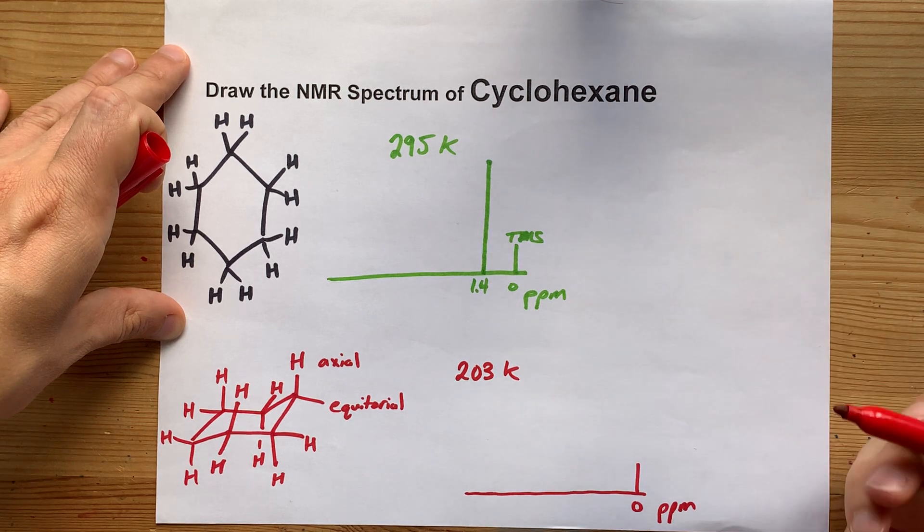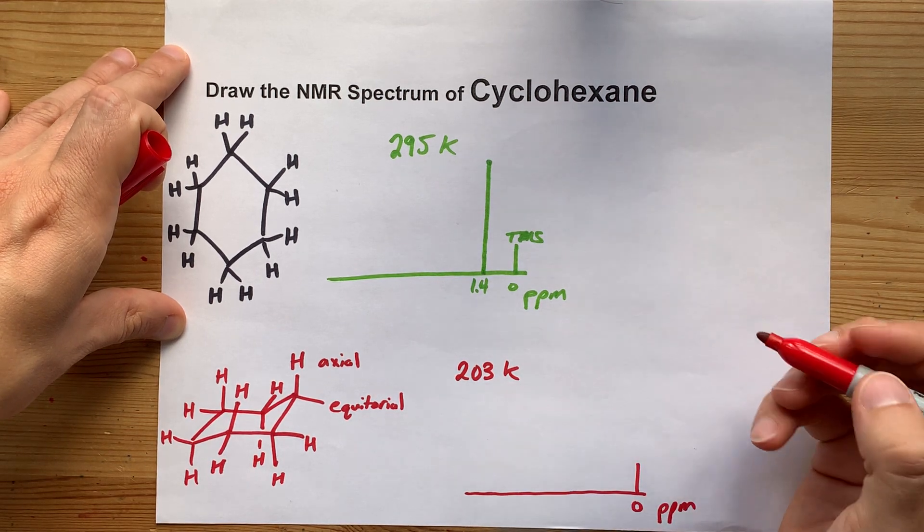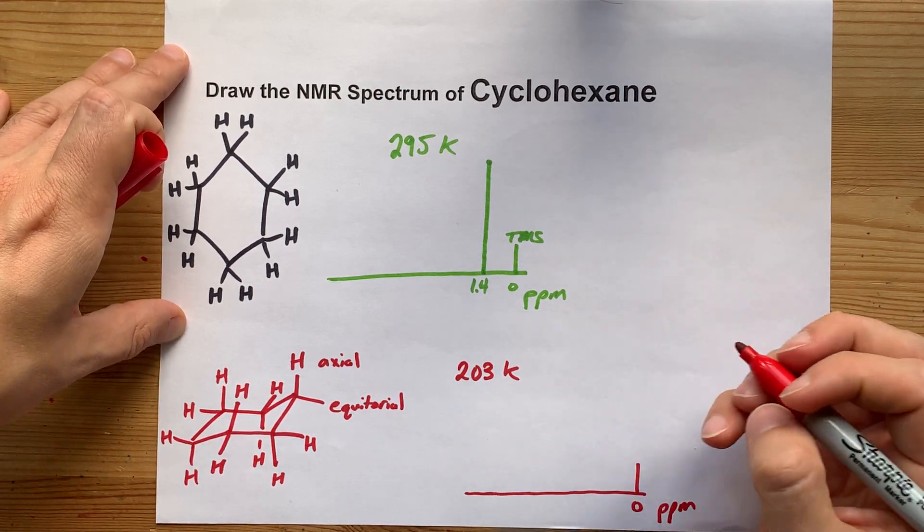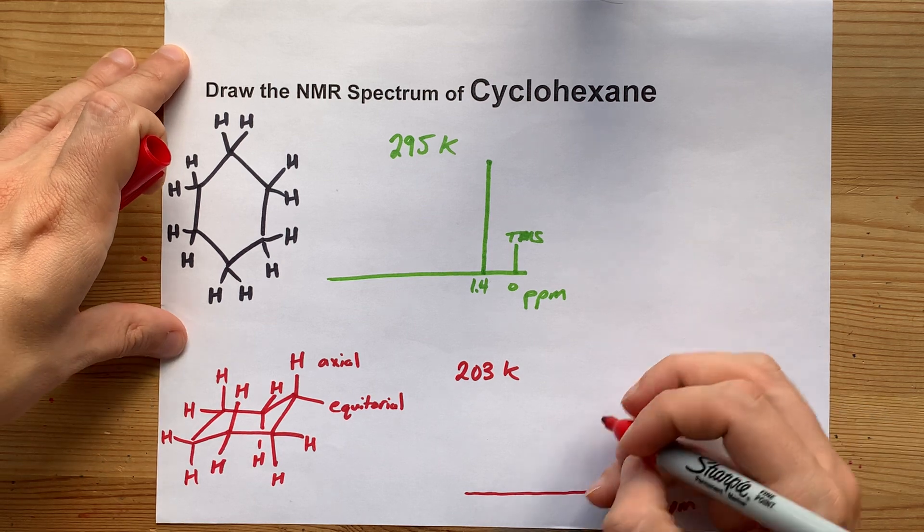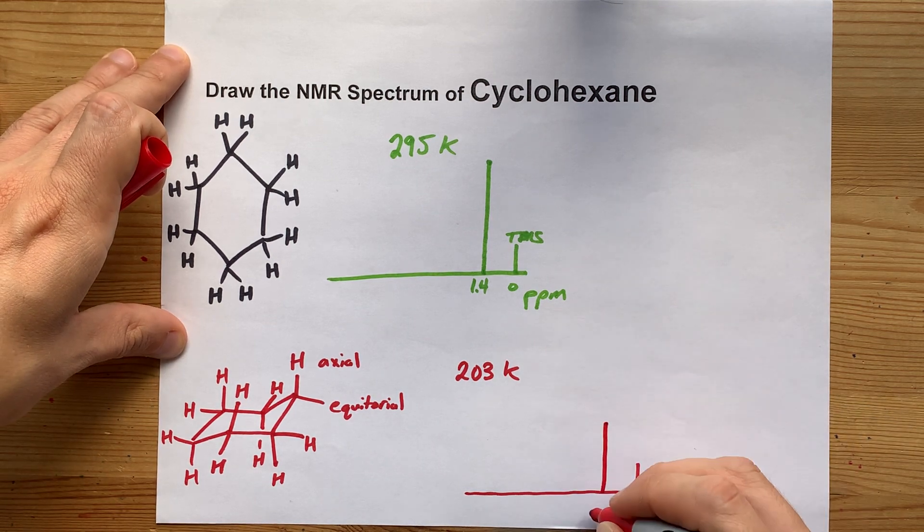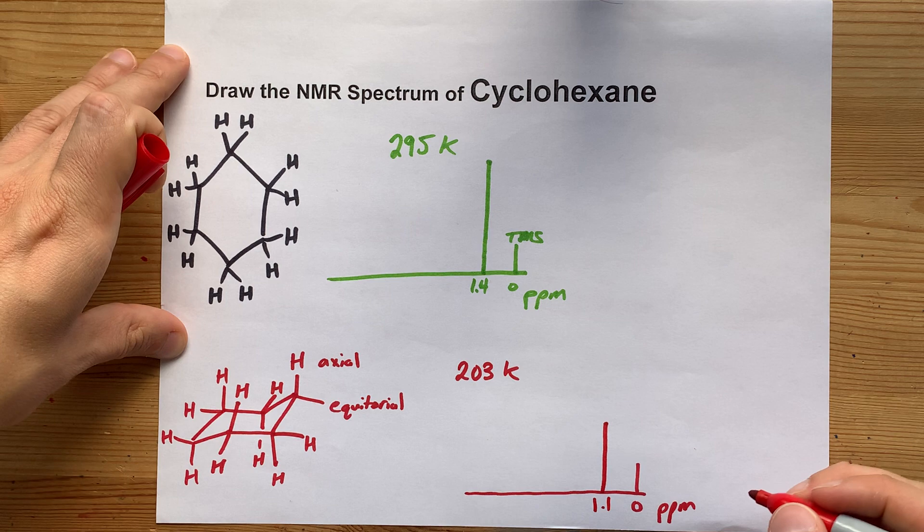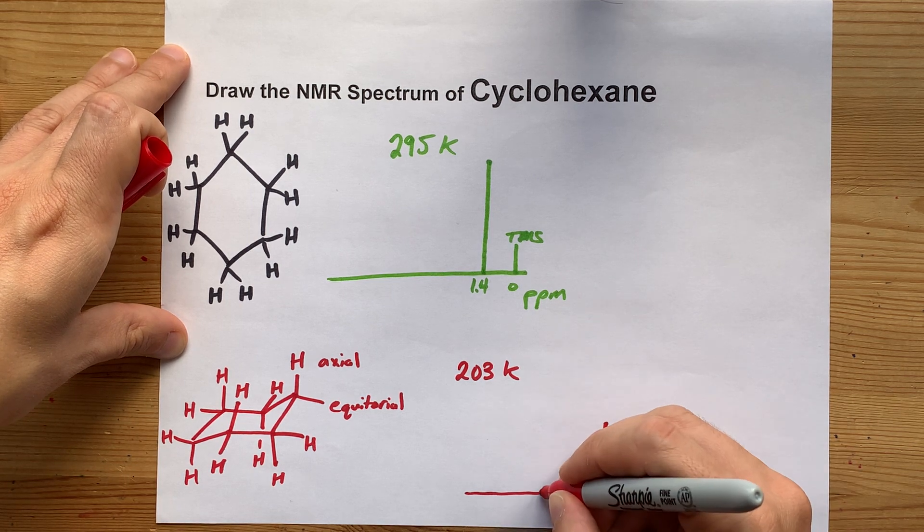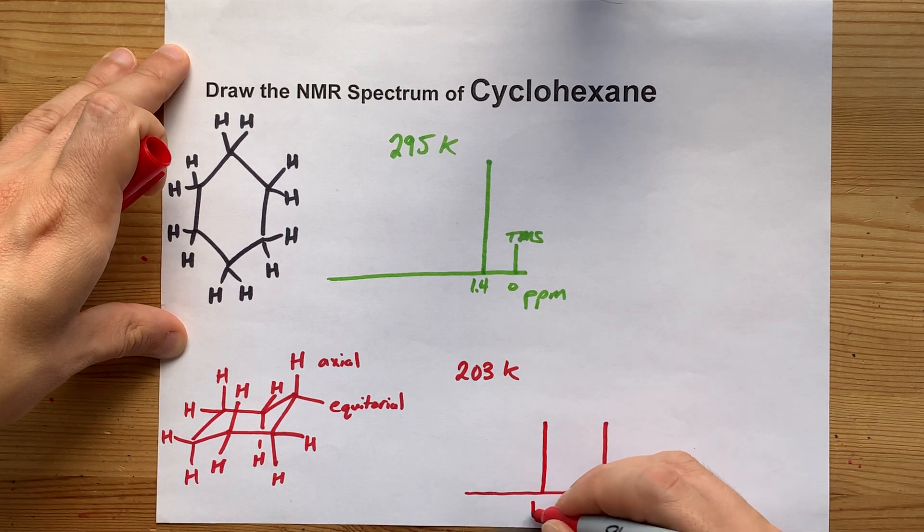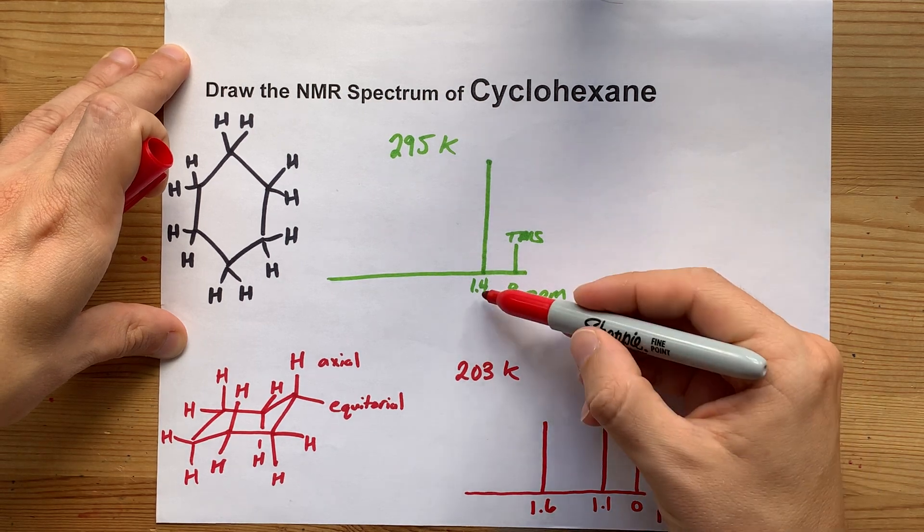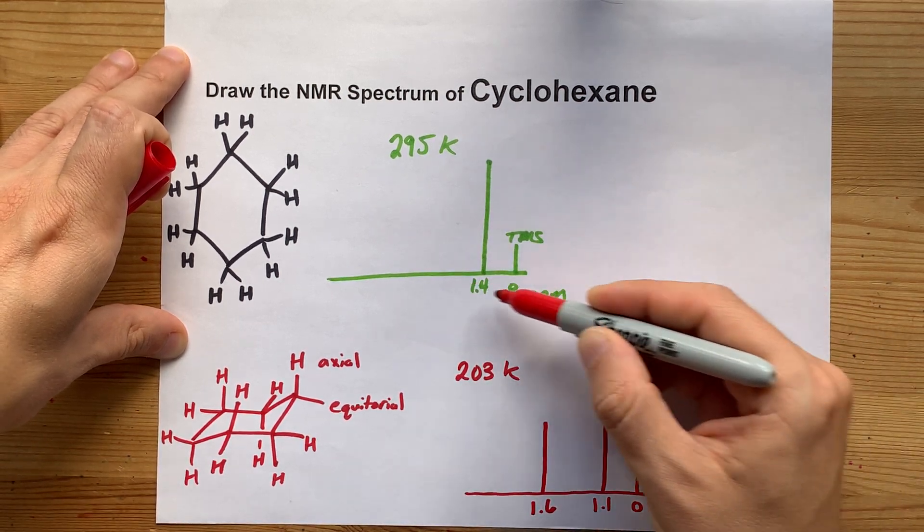In fact, if you do the NMR spectrum of cyclohexane at a low temperature, you're going to get one peak for the axial hydrogens at, say, 1.1 and another one for the equatorial hydrogens at 1.6. So you can tell that this 1.4 ended up being about the average.